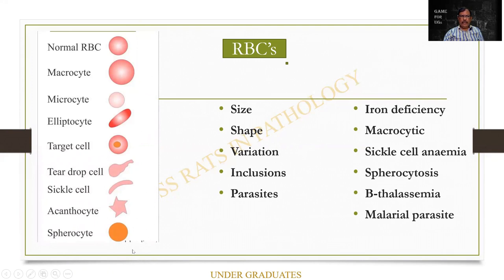These are all the variations you should have in mind. What is a normal one? Central pallor is there. When it is larger, it is a macrocyte. Small and pale — microcyte. Ovoid — elliptocyte. Target cell with central hemoglobinization. Teardrop cells, sickle cells. Acanthocyte is a blunt, irregular cell. Spherocyte with no central pallor — small dark cells. Some of these variations are explained well in my one-page book as well as in the record notes.